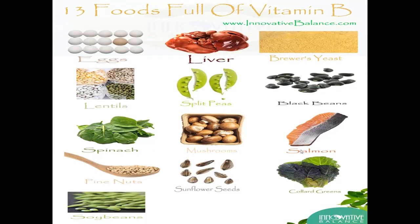Here are the food items that are rich in B complex vitamins. Egg, liver, brewer's yeast, lentils, split peas, black beans, spinach, mushroom, salmon, pine nuts, sunflower seeds, collard greens and soy bean are some of the food items that contain B complex vitamins in them.